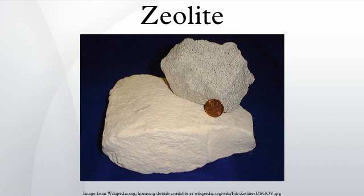It is also possible to produce zeolite structures that do not appear in nature; Zeolite A is a well-known example. Since the principal raw materials used to manufacture zeolites are silica and alumina, which are among the most abundant mineral components on Earth, the potential to supply zeolites is virtually unlimited.